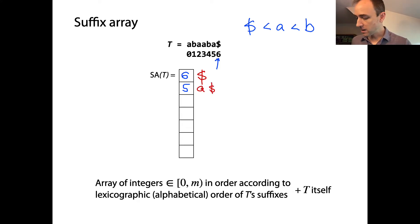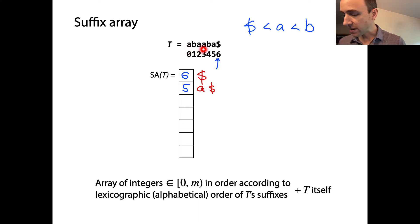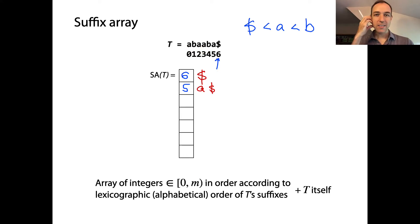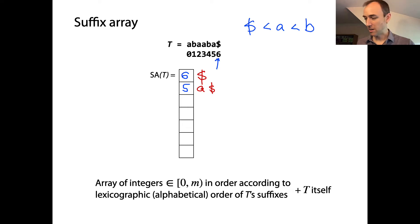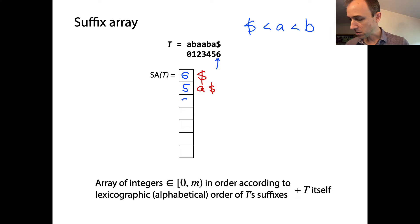What's the next one? There are three more a's here. Two of the a's have a 'b' right after them, but one of the a's has an 'a' right after it. So the 'a' that has an 'a' right after it will come next in alphabetical order — that's the suffix at offset two. I'm going to put a two here, and that corresponds to the suffix 'a, a, b, a$'.